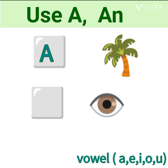Next, E. The first letter is E. E is vowel and singular. So we use article AN.